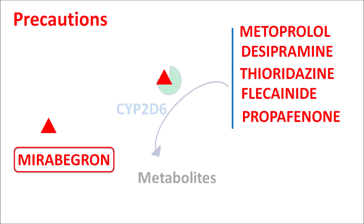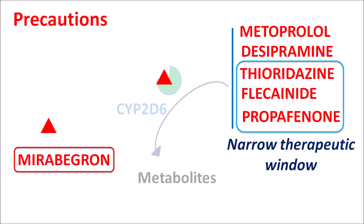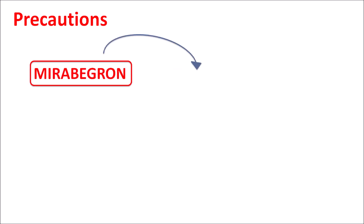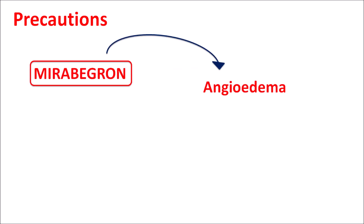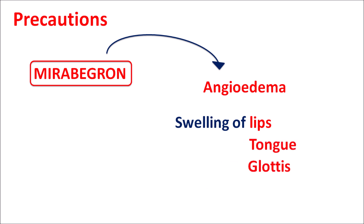Mirabegron acts as a CYP2D6 inhibitor, blocking this enzyme so these drugs are not converted into their metabolites, resulting in increased serum levels. This can increase the toxicity of these drugs. Drugs like thioridazine, flecainide, and propafenone have a narrow therapeutic window, so when combined with Mirabegron, their levels can suddenly increase, resulting in toxic reactions. Mirabegron can also cause angioedema — swelling of the lips, tongue, glottis, and larynx.